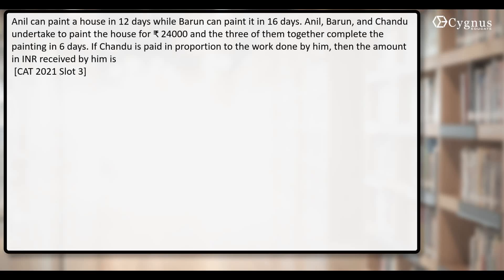Right. A similar kind of question came in CAT 2021 Slot 1, only the data was different. The terms were the same, based on time and wages. That means you need to distribute the salary according to the work done by them.